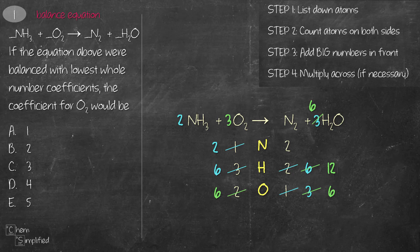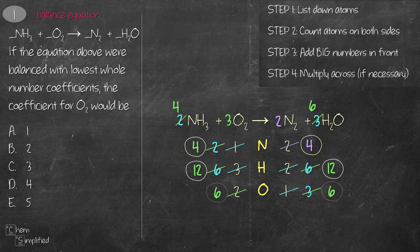To balance the hydrogen we place a 4 in front of NH3, but that affects our nitrogen count, so we add a 2 in front of N2. Now our equation is balanced because we have the same number of nitrogen, hydrogen, and oxygen on both sides. The coefficient in front of O2 is 3, so the answer is C.